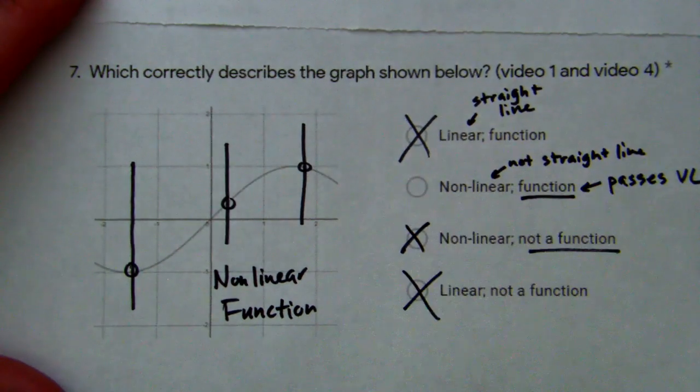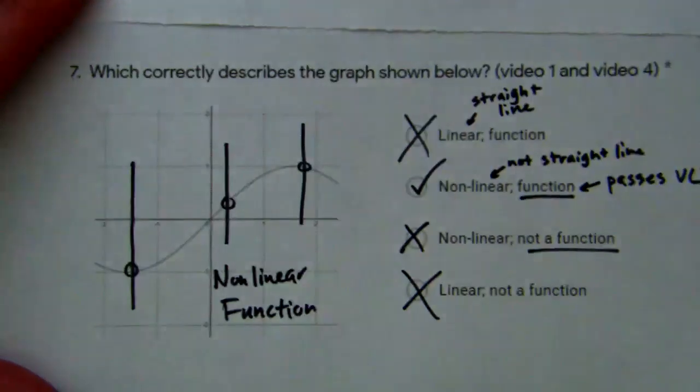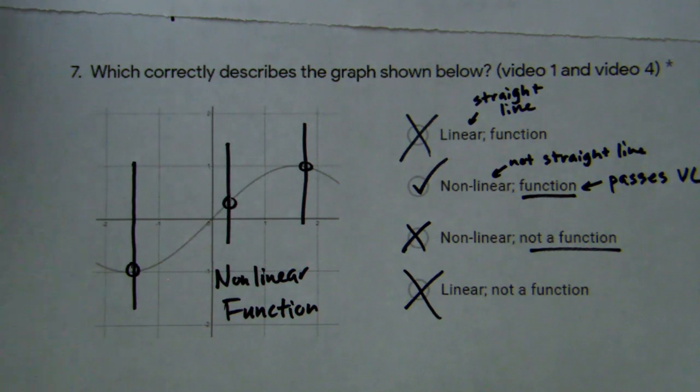So it's a function, it's not option three. It's going to be option number two. It is nonlinear because it's not a straight line, and it passes the vertical line test, so it is a function.